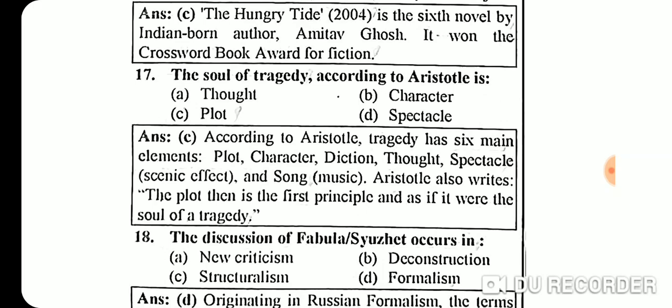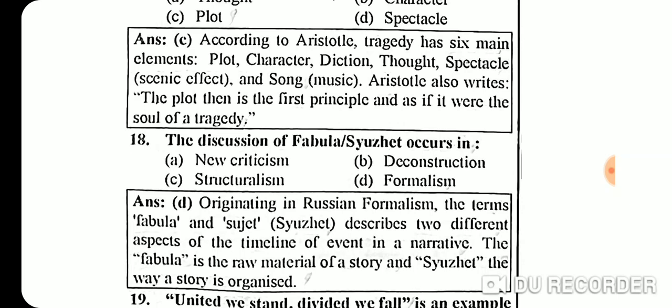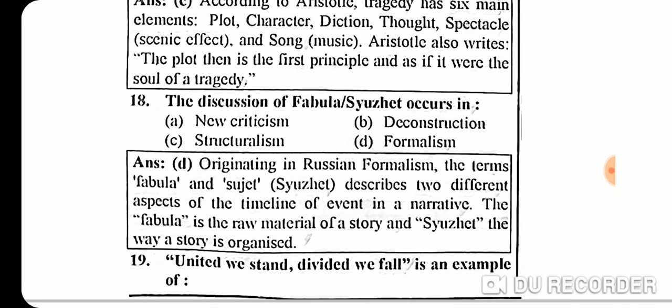Question 17: The soul of tragedy according to Aristotle is plot. According to Aristotle, tragedy has six main elements: plot, character, diction, thought, spectacle, and song. Aristotle also wrote that plot is the first principle and, as it were, the soul of a tragedy.